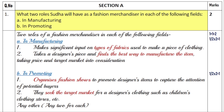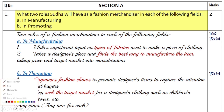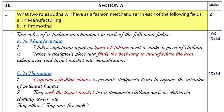Let us begin with Section A. The first question asks: what two roles will Sudha have as a fashion merchandiser in each of the following fields — manufacturing and promoting? Here we will be talking about the functions of fashion merchandisers. I will explain and cover the topics again so that revision is also done as we finish this sample paper.